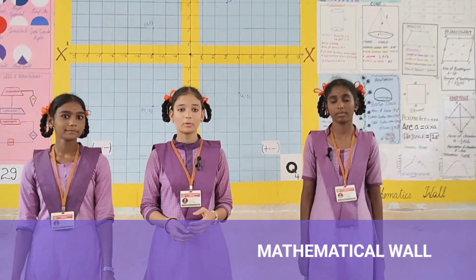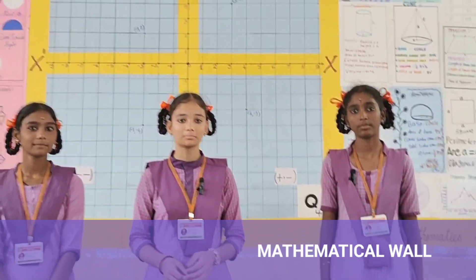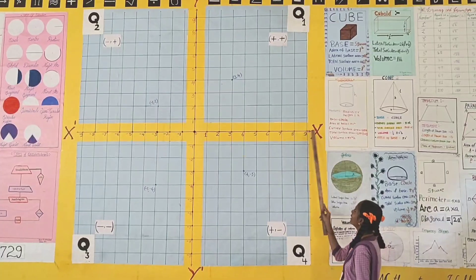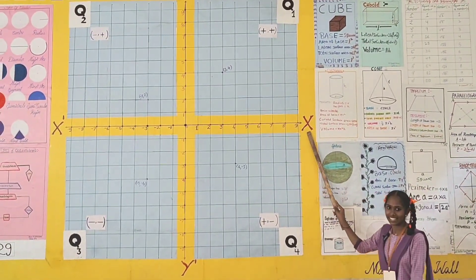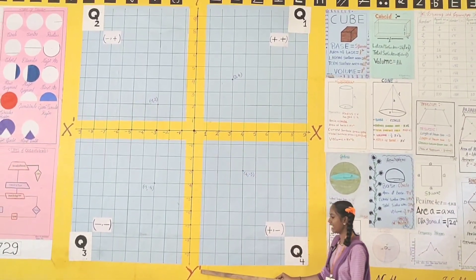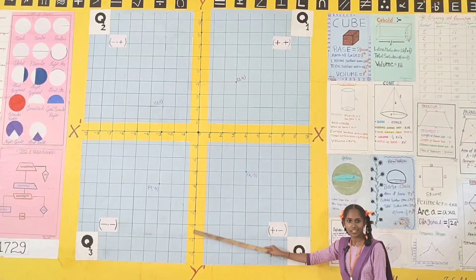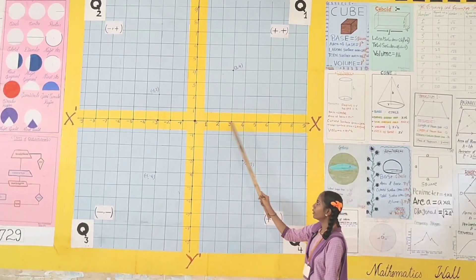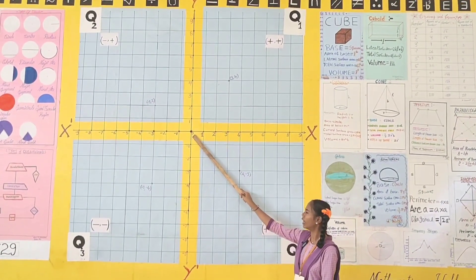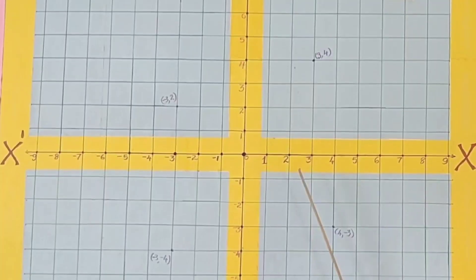Our friends explained each and everything in this mathematical world. Coordinate plane: the horizontal axis is called x-axis, the vertical axis is called y-axis. These both axes are called coordinate axes. The point of intersection of axis is called origin. The coordinates of origin are 0,0.